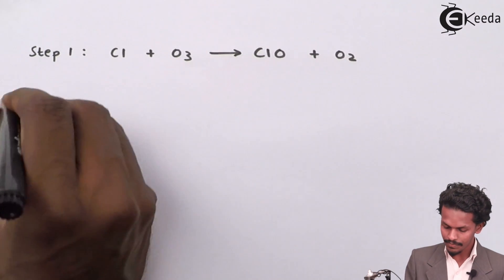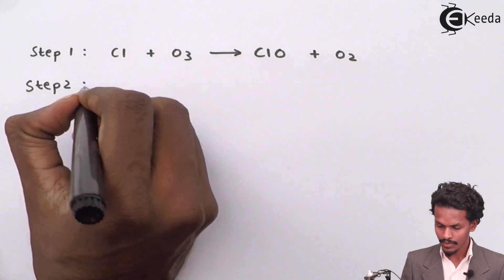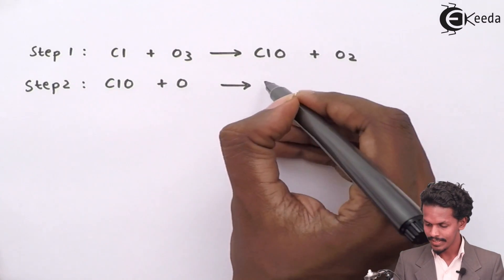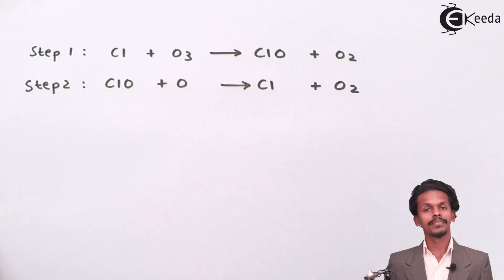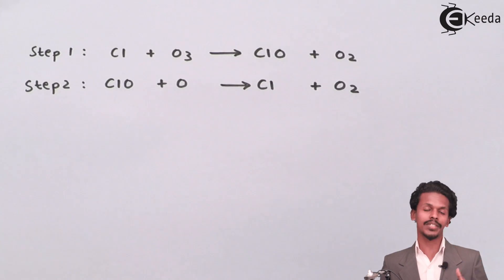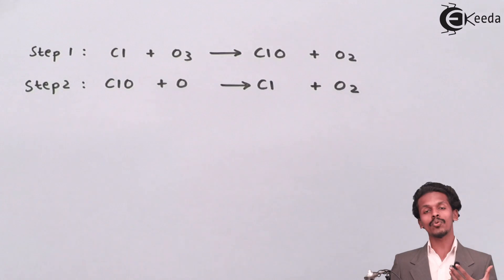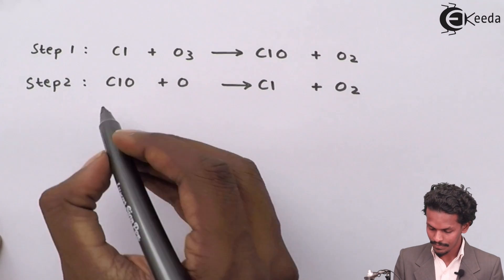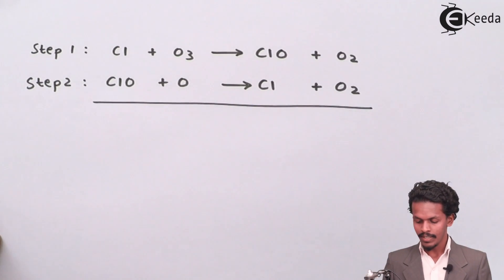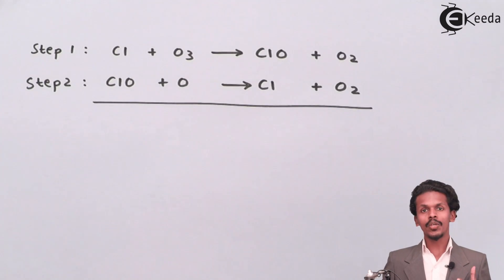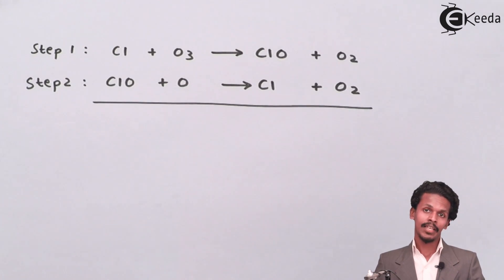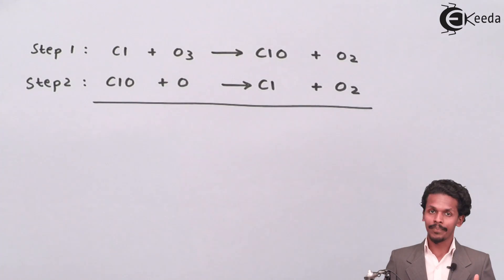Step two: ClO + O → Cl + O2. These are the two steps. To get the overall reaction, we look at species present on the left-hand side and the right-hand side that are equal, so we can cancel them out.